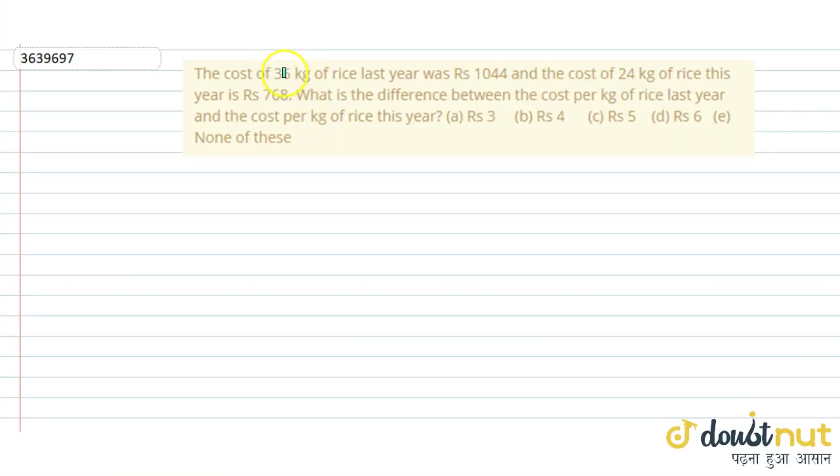The question given is: the cost of 36 kg of rice last year was Rs. 1,044, and the cost of 24 kg of rice this year is Rs. 768. What is the difference between the cost per kg of rice last year and cost per kg of rice this year?